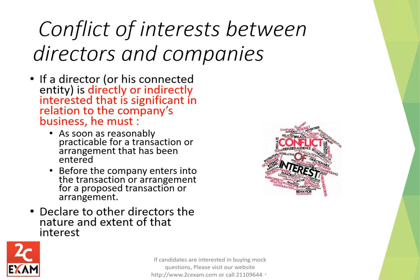Conflict of interest: if a director or connected entity has a significant direct or indirect interest in the company's business, the director must, as soon as reasonably practicable, declare to the other directors the nature and extent of that conflict of interest — both for existing transactions and before entering into proposed transactions — so other directors can decide whether the arrangement is fair.